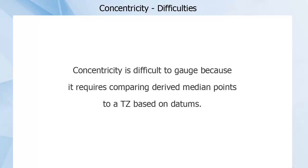Concentricity is difficult to gauge because it requires comparing derived median points to a Tz based on datums.